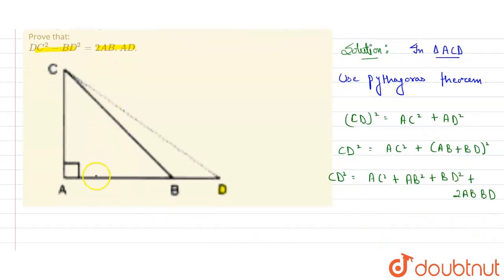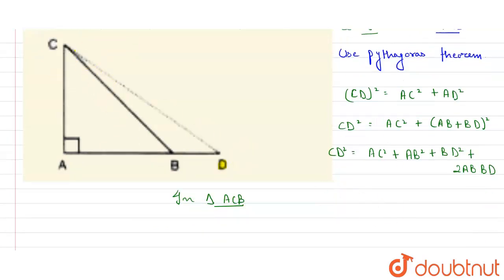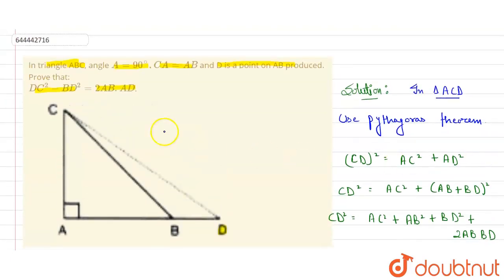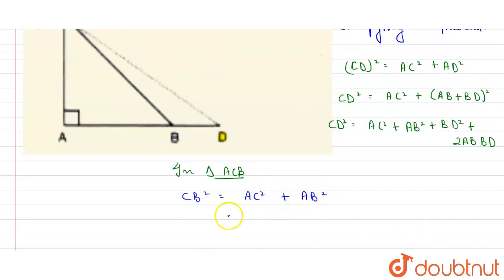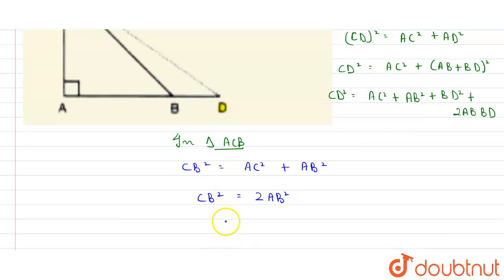Next, consider triangle ACB. Again applying the Pythagorean theorem: CB² = AC² + AB². Since CA = AB (given), we get CB² = 2·AB², so AB² = (1/2)·CB². This is equation two.